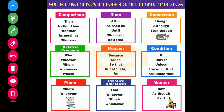Subordinating conjunctions can be categorized by use: for comparison — than, rather than, whether, as much as, whereas; for time — as soon as, until; for concession and relative pronouns — who, whose, where; for reason — because, since; for condition — if, only if, unless; for place — where, wherever; for relative adjectives — that; and for manner as well.